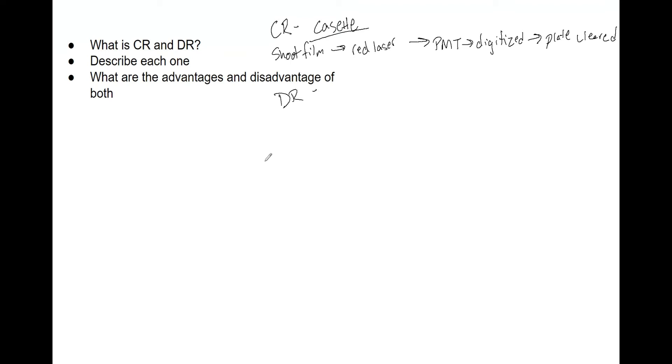So it uses the indirect flat panel detectors. So essentially, amorphous silicon is the most common. It uses the amorphous silicon flat panel detectors. This ultimately is going to convert x-rays to light, and then that goes to the photodiode, and then a digital image.